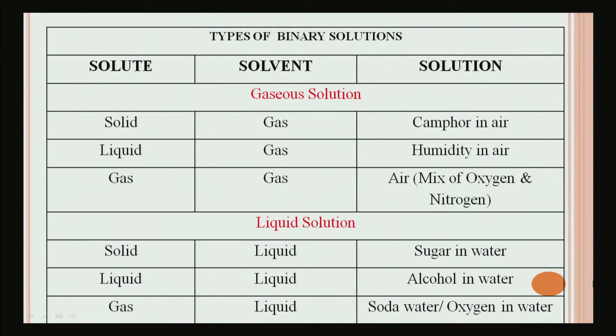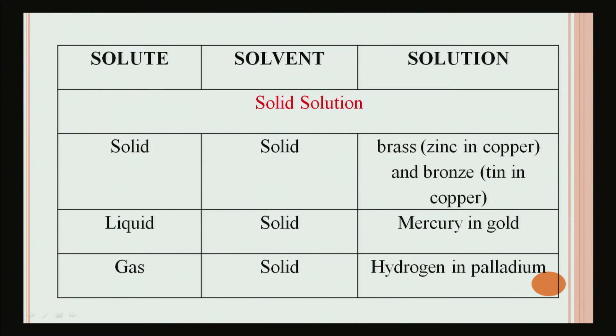In a liquid solution, the solvent is liquid. When solid is dissolved in liquid — like sugar in water — that is a liquid solution. When liquid is dissolved in liquid — like alcohol in water — or when gas is dissolved in liquid — like soda water or oxygen in water — these are also liquid solutions. In a solid solution, the solvent is solid. Examples include solid dissolved in solid like brass (zinc in copper) or bronze (tin in copper); liquid dissolved in solid like mercury in gold; and gas dissolved in solid like hydrogen in palladium. In this chapter we will mainly study liquid solutions where the solvent is liquid and the solute may be solid, liquid, or gas.